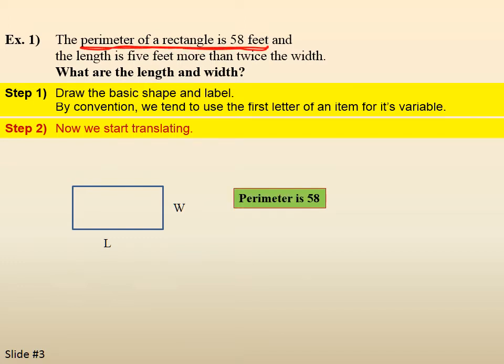So, it says the perimeter of the rectangle is 58 feet, so perimeter is 58. And I'll write that as P equals 58. Again, we're using P to stand for perimeter.